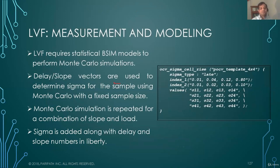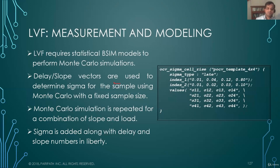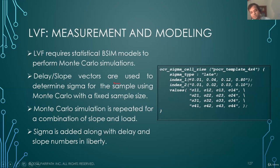How does LVF measurement and modeling work? Like AOCV, LVF requires statistical process corner (BC) models to perform Monte Carlo simulation. The same delay and slope vectors are used to determine sigma for the sample. The Monte Carlo simulation is repeated for a combination of slope and load, and the sigma is added along with delay and slope numbers in the Liberty file — so you have OCV sigma cell rise, OCV sigma cell fall, OCV sigma rise transition, and OCV sigma fall transition.